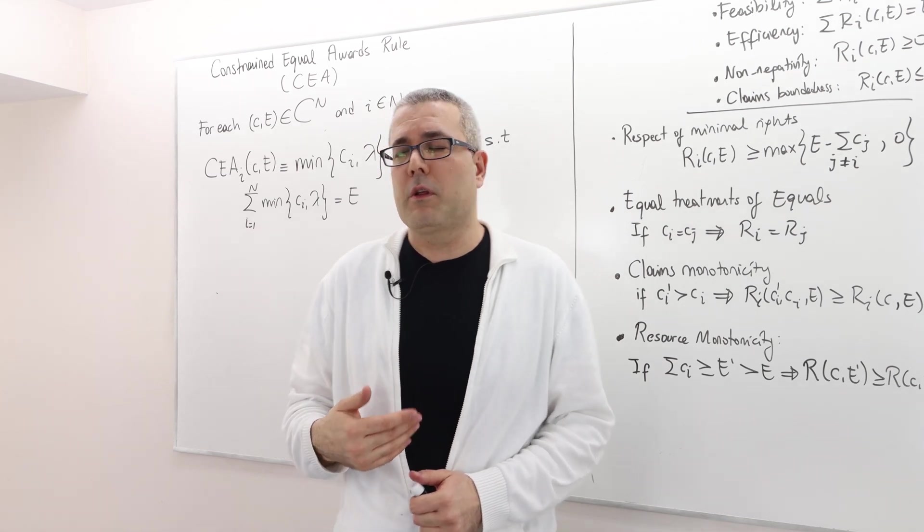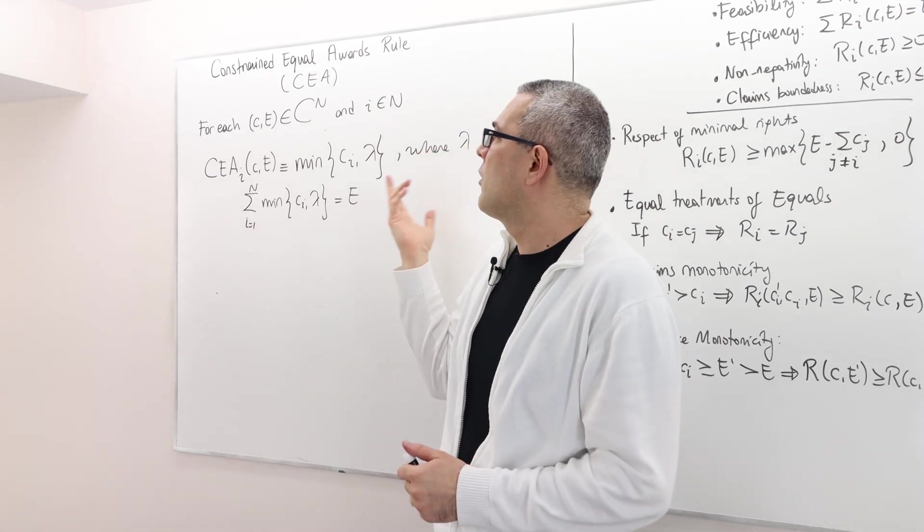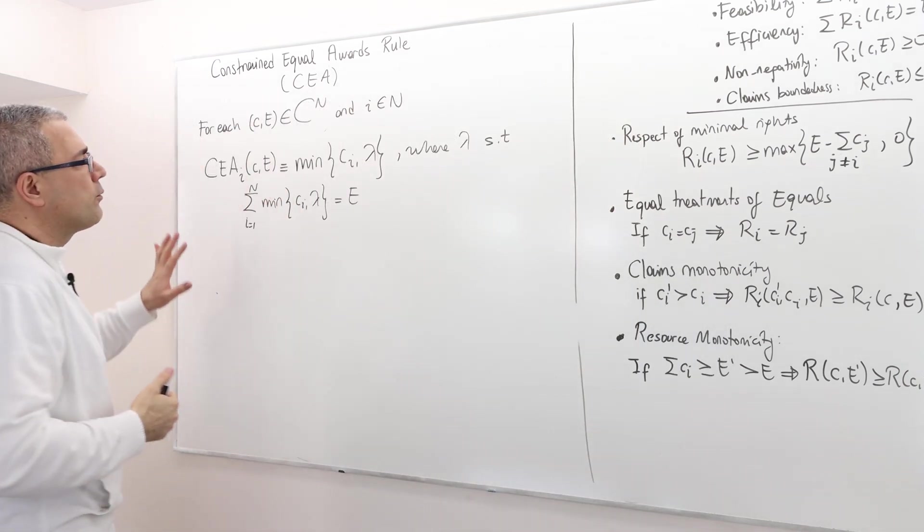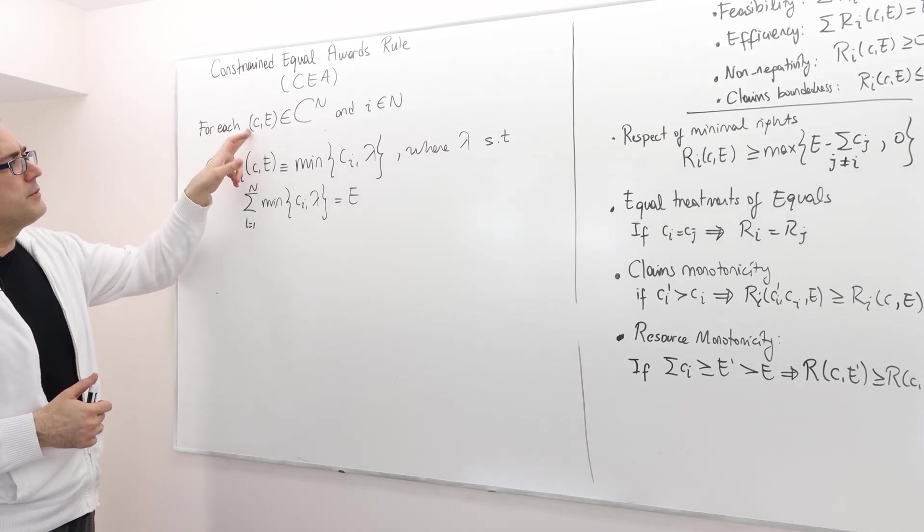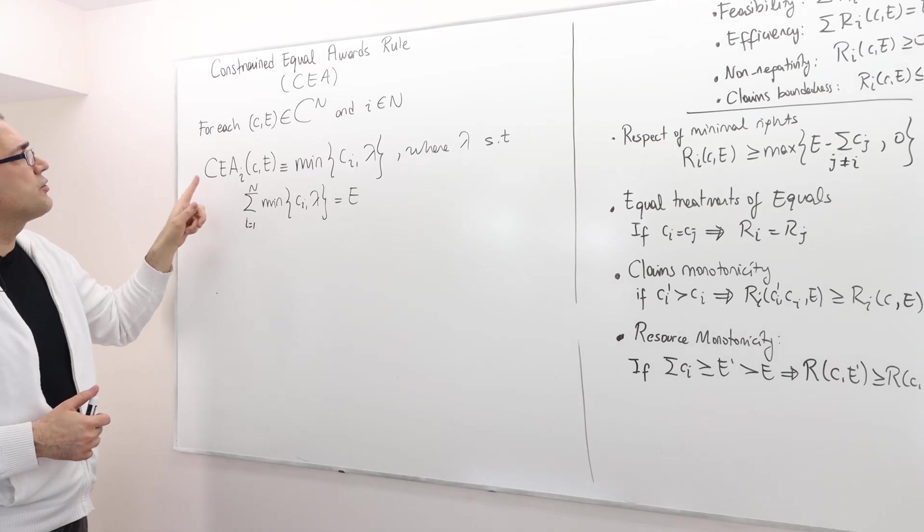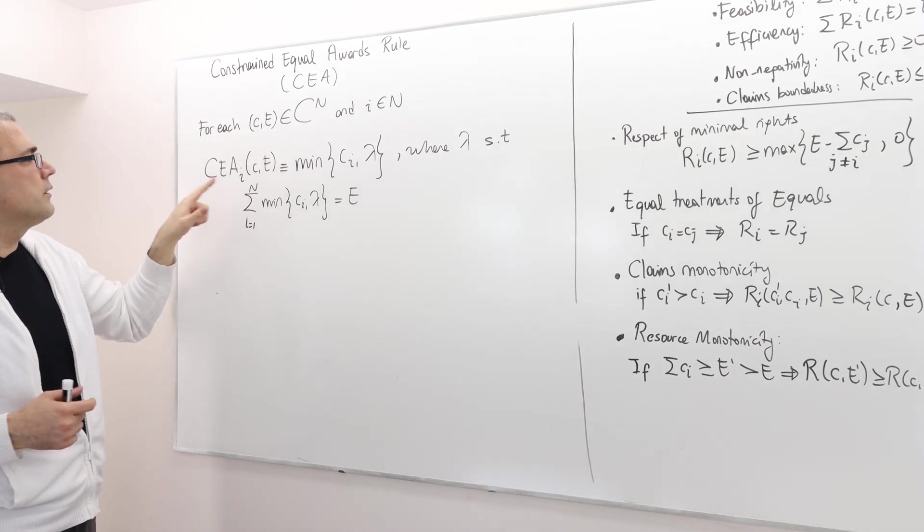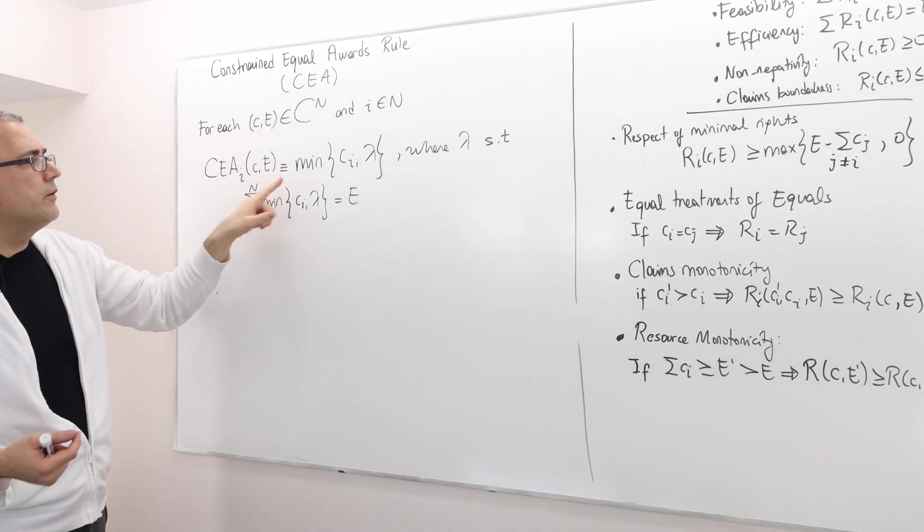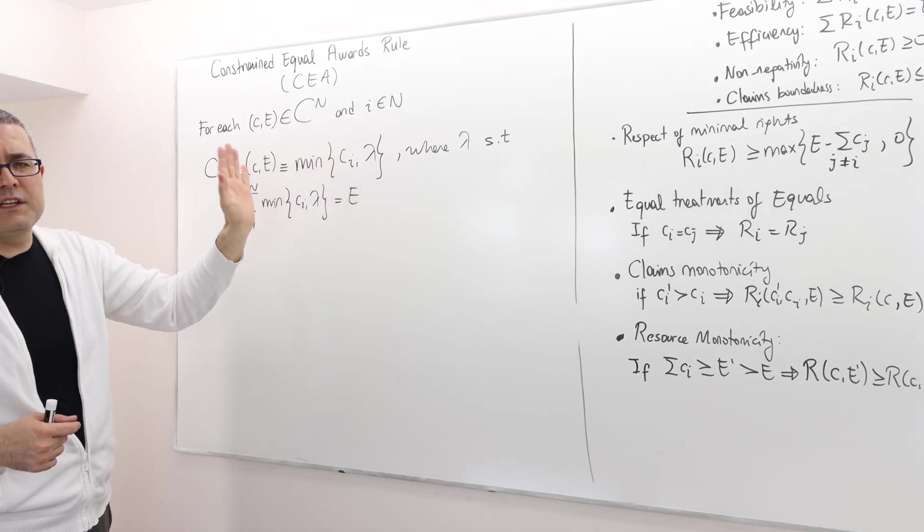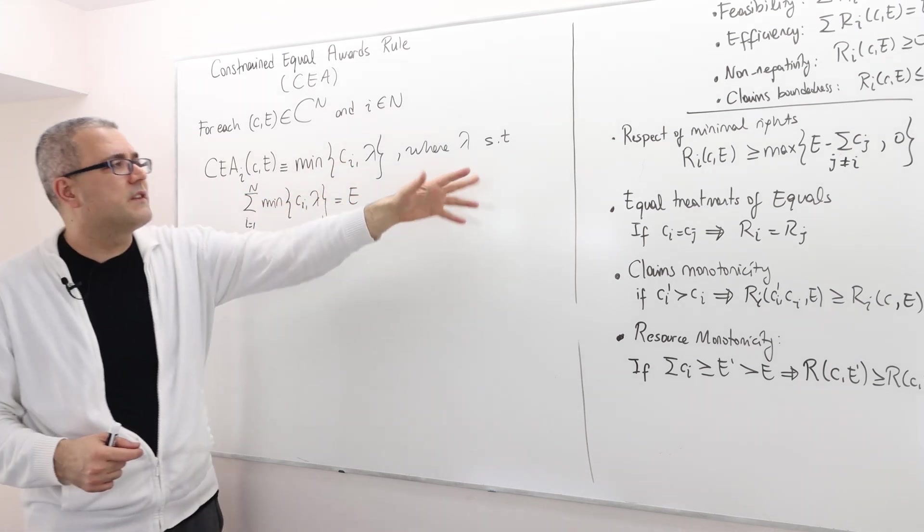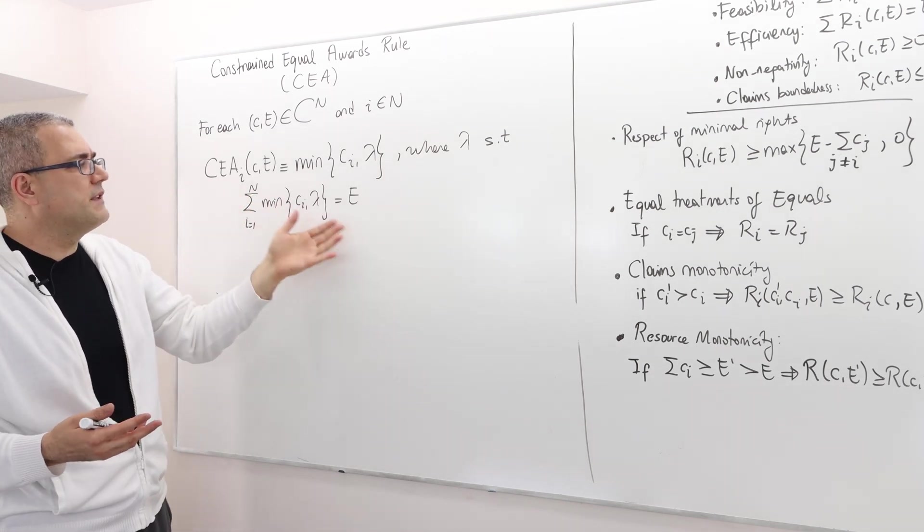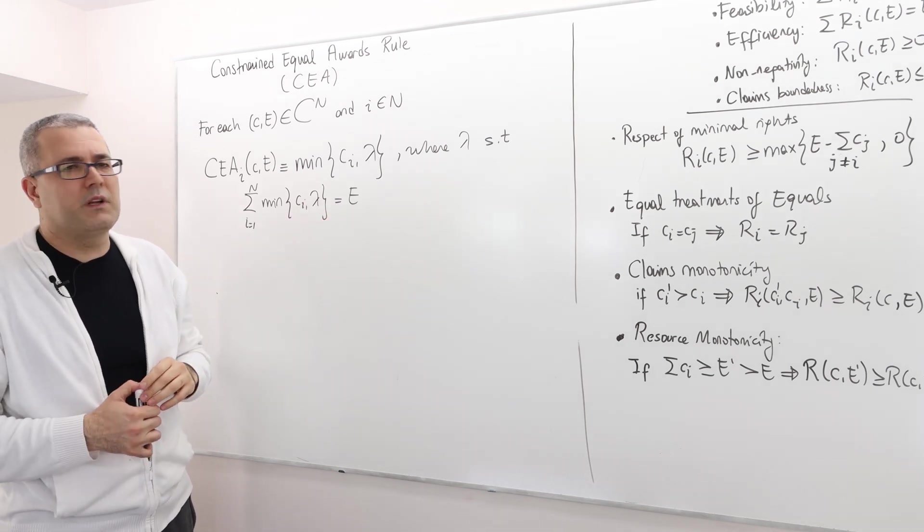Hello everyone, in this episode I'm going to talk about another division rule called the constraint equal awards rule. Here is the formal definition: for any claims problem CE and for any agent i, the constraint equal awards rule awards player i the minimum of two parameters, ci or lambda, whichever is minimum. Lambda satisfies such that the summation of the rewards adds up to the total surplus E.